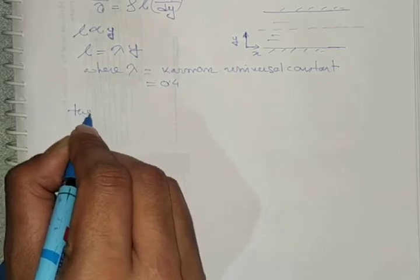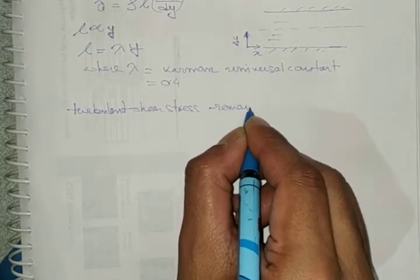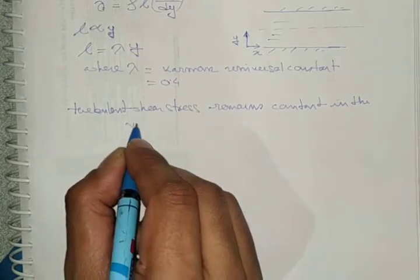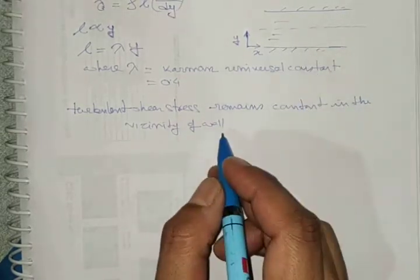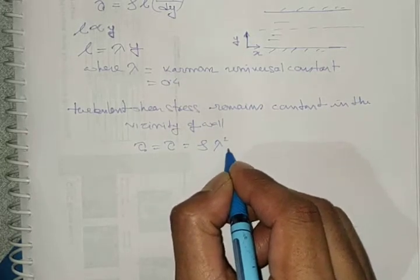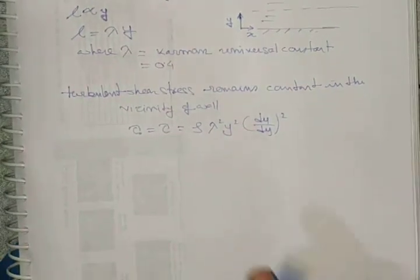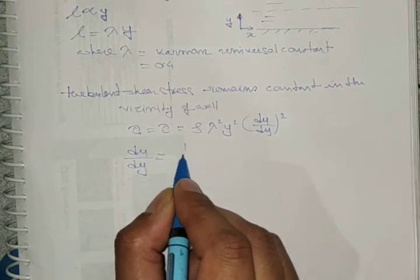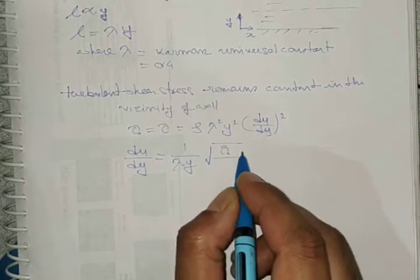The turbulent shear stress remains constant in the vicinity of the wall, so τ₀ = τ = ρλ²y²(du/dy)².